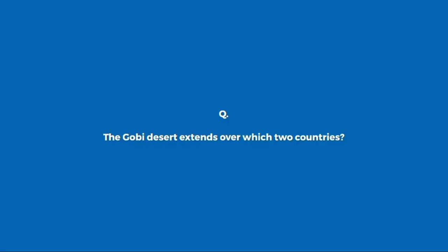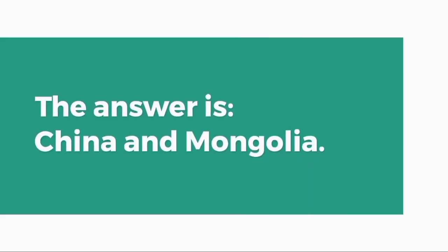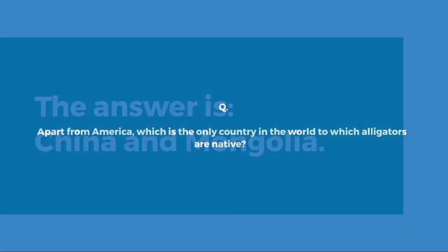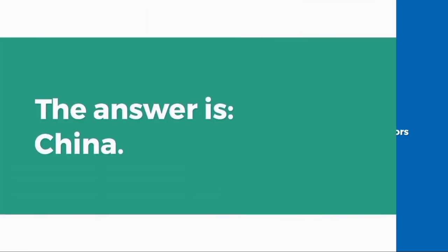The Gobi Desert extends over which two countries? China and Mongolia. Apart from America, which is the only other country in the world to which alligators are native? China.